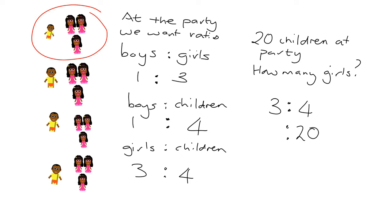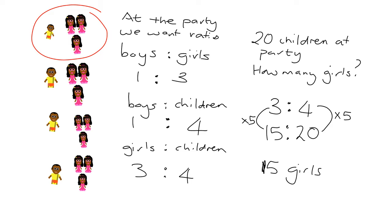We have five groups of four children, so we need five groups of three girls — in other words, 15 girls. And we can immediately say: if we've got 15 girls, we must have five boys.